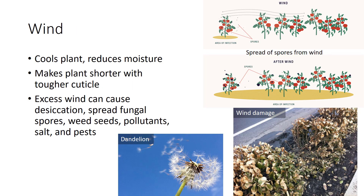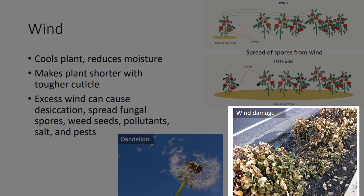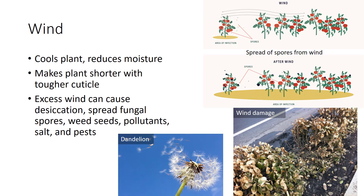Wind is air in motion, which can be beneficial or harmful. Wind cools the plant when temperatures are high and reduces moisture on plant and soil surfaces, which reduces disease problems. Wind also makes the plant shorter with a tougher cuticle—an impermeable waxy material on the outside layer of leaves and stems that prevents water loss. By shortening the plant and making a tougher cuticle layer, the plant is more resistant to mechanical stress, pathogens, and insect attack. Although wind can be beneficial, it can also cause critical problems. Shorter plants with smaller leaves yield significantly less than normal-sized plants. Excessive wind can cause desiccation, which accelerates the senescence process, leading to premature death. Excessive wind can also result in physical damage to the plant as a result of sheer force. Wind can also spread fungal spores, weed seeds, pollutants, salt, and other pests.